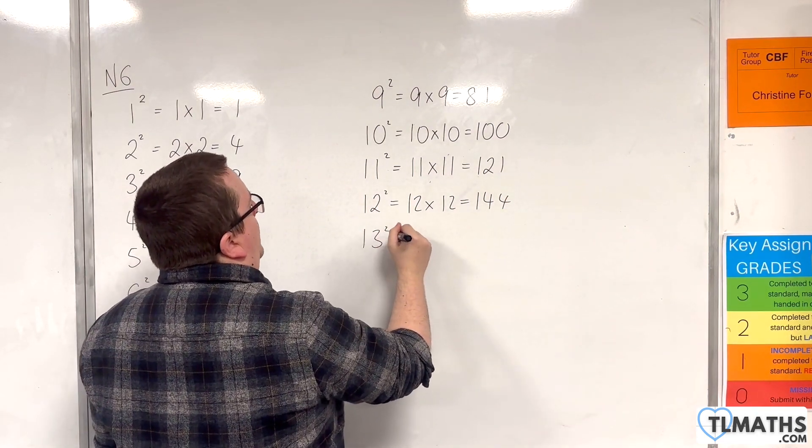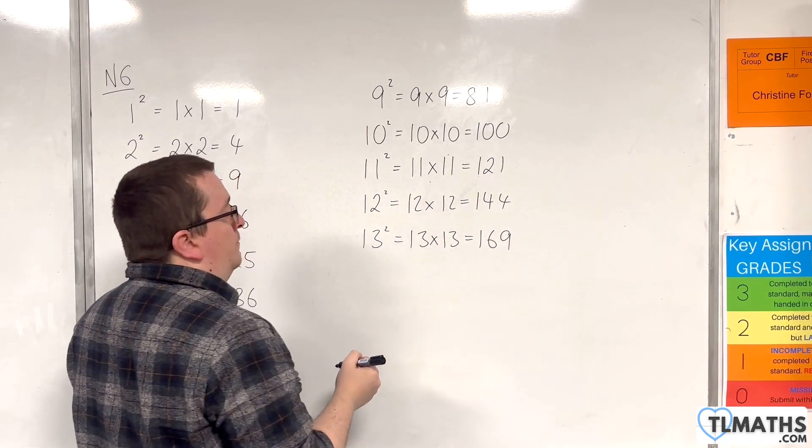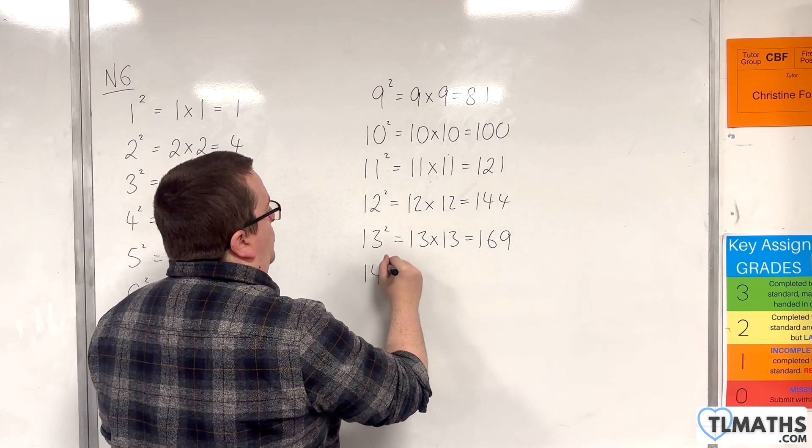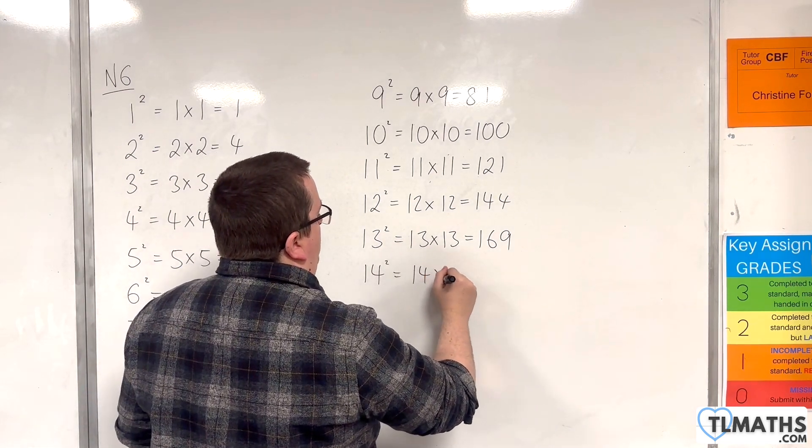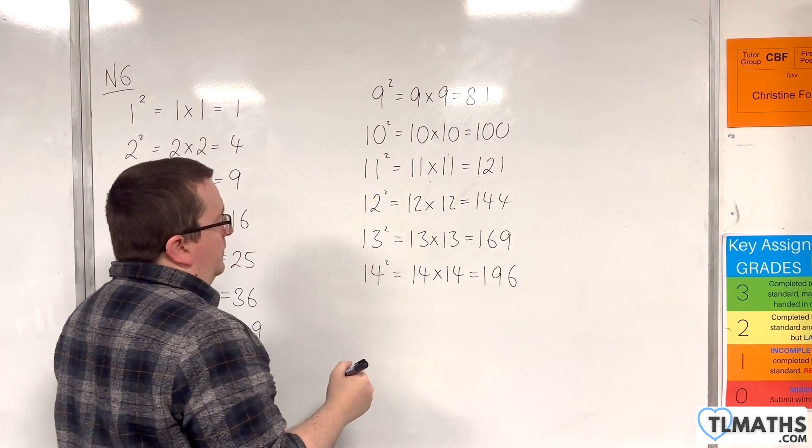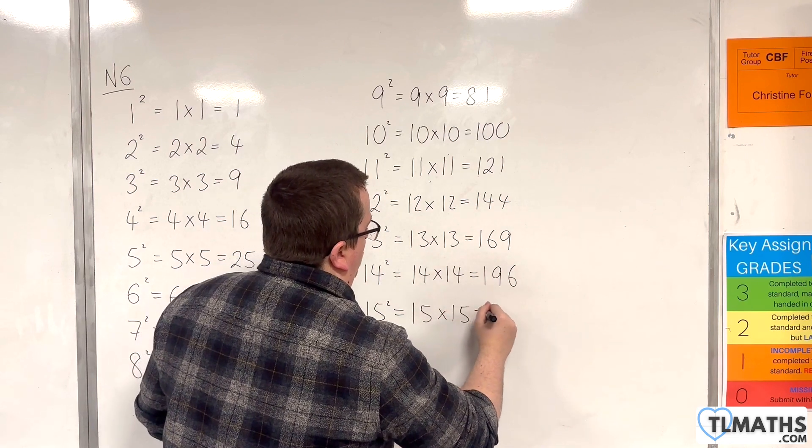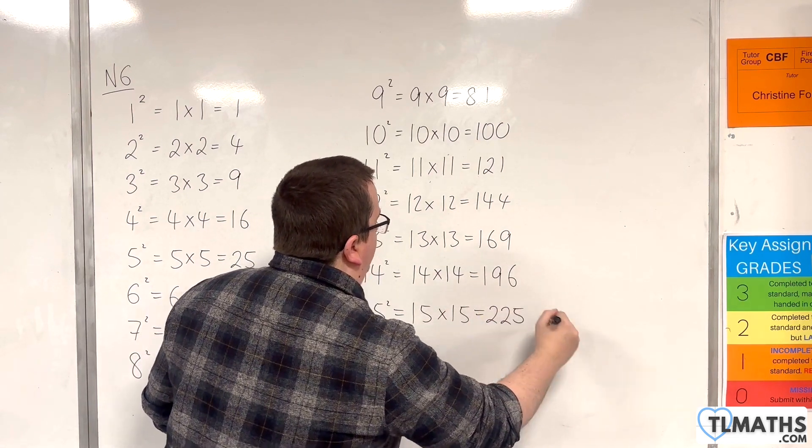13 squared is 13 times 13, which is 169. 14 squared is 14 times 14, which is 196. And 15 squared, 15 times 15, which is 225.